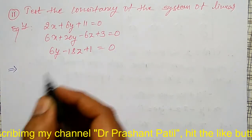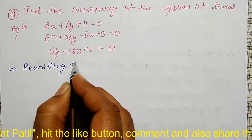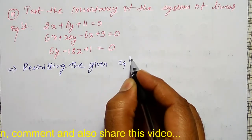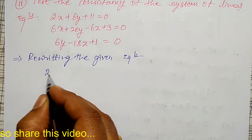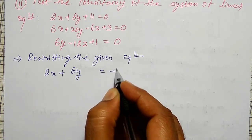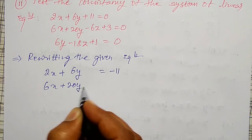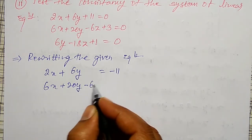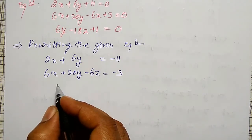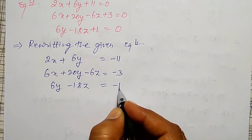Rewriting the given equations, what I am going to get here: 2x plus 6y equal to minus 11. Second equation, 6x plus 20y minus 6z equal to minus 3. And last equation, 6y minus 18z equal to minus 1.